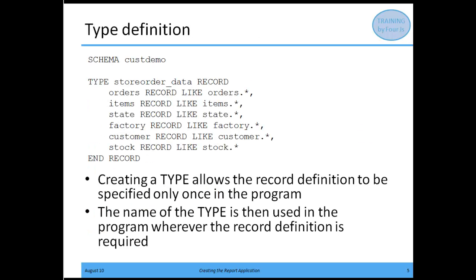Before we look at the report driver, one of the first things you'll want to do is create a type definition. By creating a type definition, you're allowing the record definition to be defined only once in the program, and then you use that type name whenever that record definition is required. Here's an example of a type definition for the CUSDEMO database — I have my schema CUSDEMO, and underneath I'm including all the tables and all the fields in this type record definition. Now I can have my store order data defined as a type, and whatever fields I need to pull out to produce my report, I know they're going to be available.